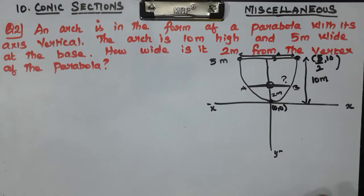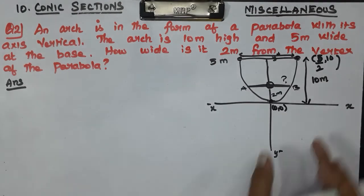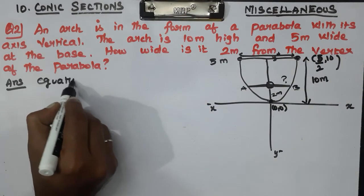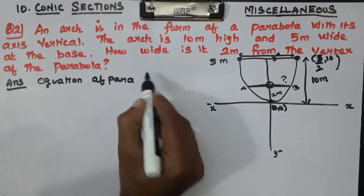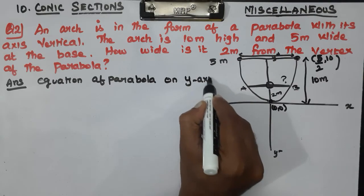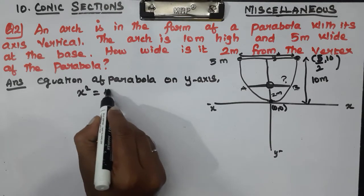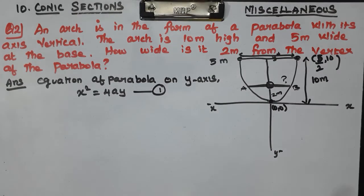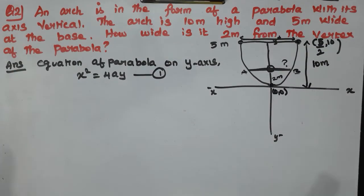Now the axis is vertical, so the equation of the parabola with Y-axis as axis is x² = 4ay. This is equation number 1. Let's go.